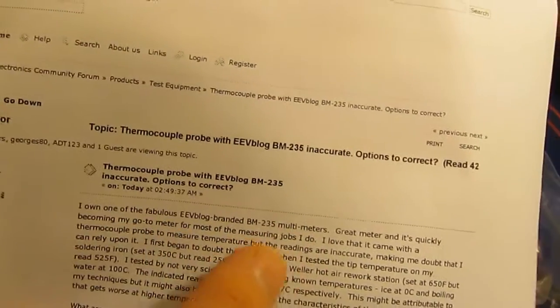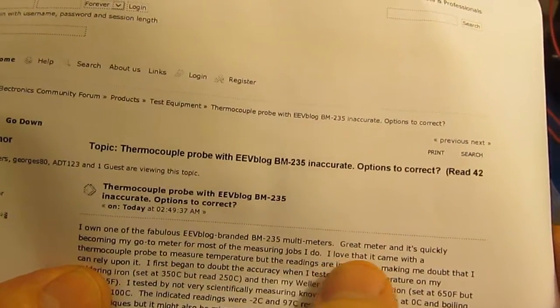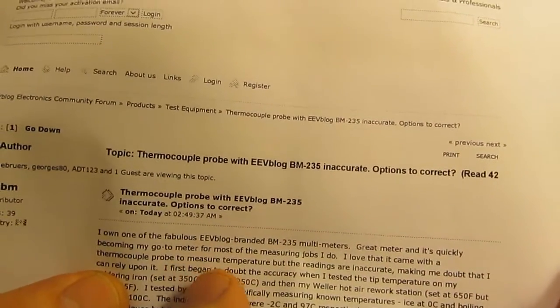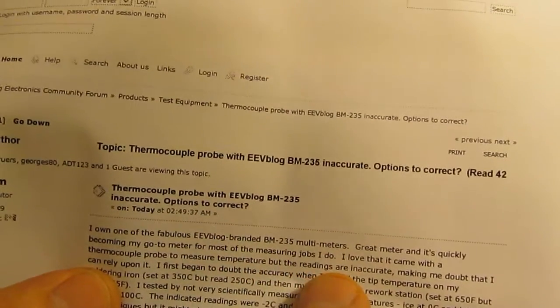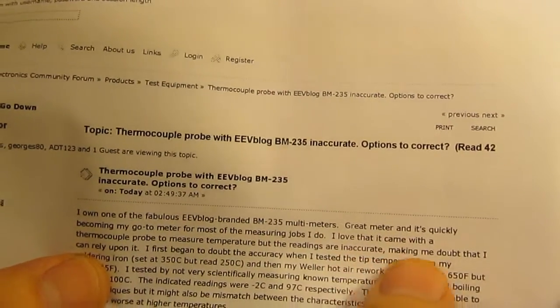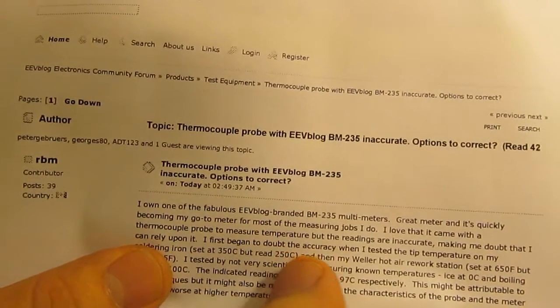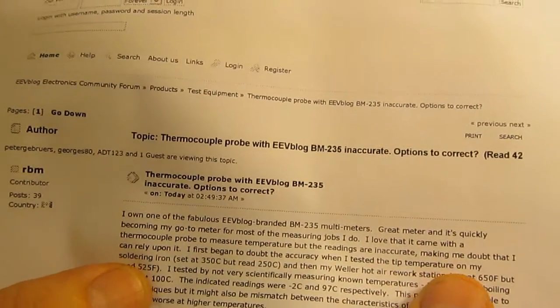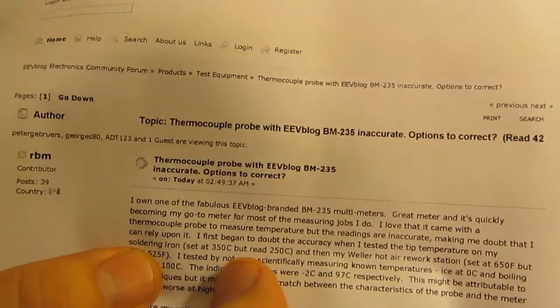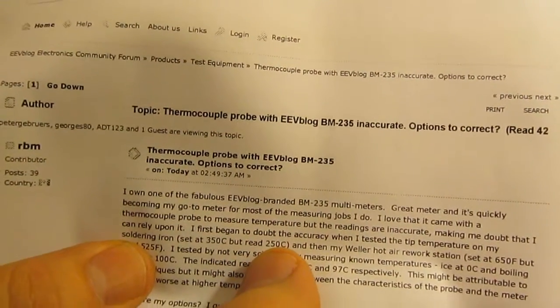He goes on to say that I love that the meter came with a thermocouple probe to measure temperature but the readings are inaccurate, making me doubt that I can rely upon it. I first began to doubt the accuracy when I tested the tip of my soldering iron set at 350 degrees C but read 250 degrees C.